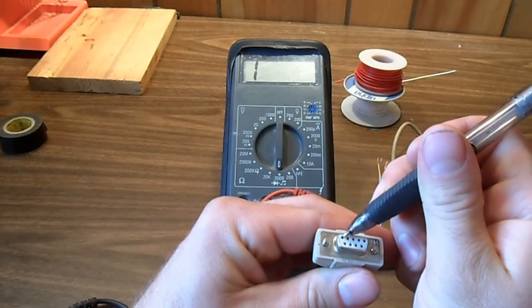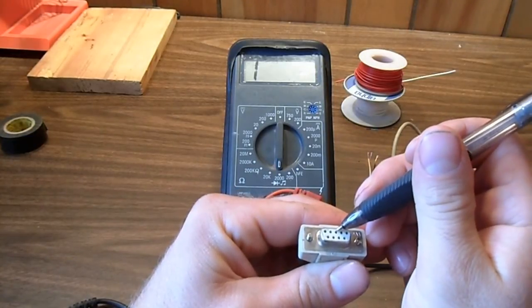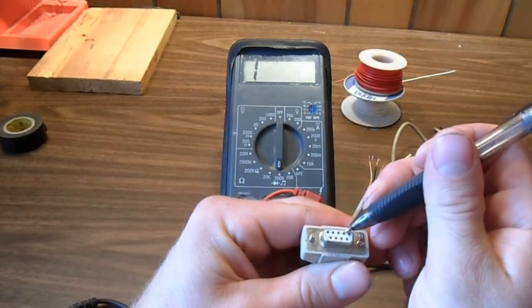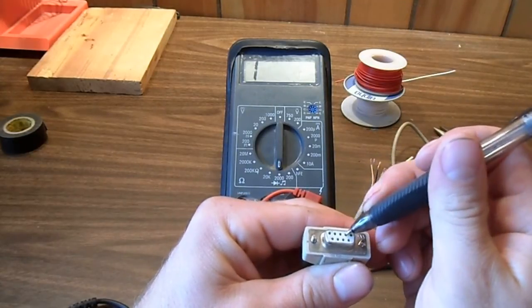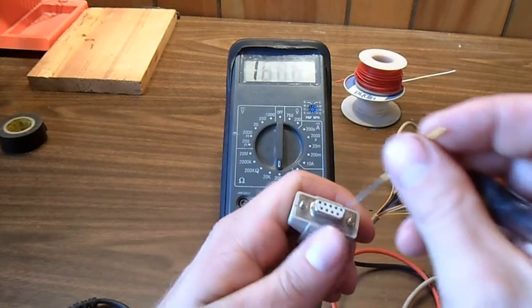This is the ground, the transmitter TXD, and the RXD. We're going to have to find these three connections. That's what we need for a PICAXE programming cable.